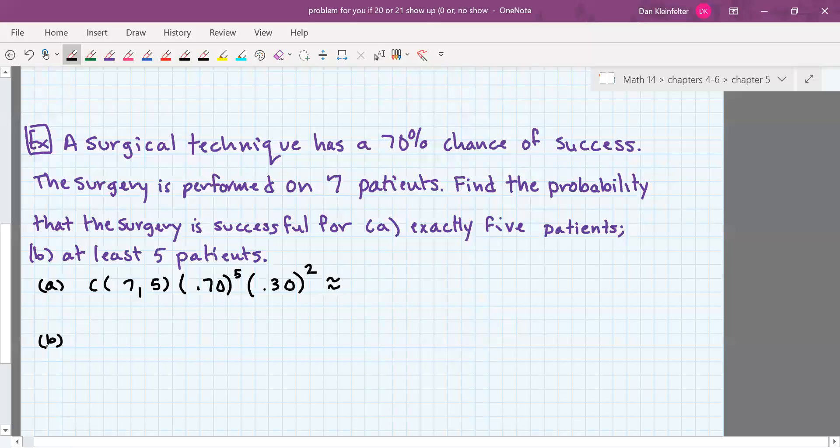So we'll calculate that here in a minute. For B, at least five patients would be five, six, or seven. Five, six, or seven. So a natural question is to think, okay, well, maybe I should use the complements rule here. If you do decide to use the complements rule, it would be fewer than five, which would be zero, one, two, three, or four. And that works out to be more cases. So nice to think about the complements rule, but in this case, it doesn't actually help you.